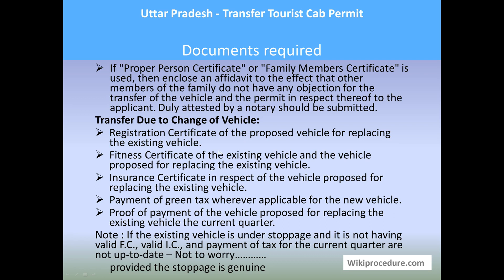For transfer due to change of vehicle: the registration certificate of the new vehicle, fitness certificate of both the existing and proposed replacement vehicle, insurance certificate for the replacement vehicle, payment of green tax wherever applicable for the new vehicle, and proof of payment of tax for the replacement vehicle for the current quarter must be provided. If the existing vehicle is under stoppage — meaning it is not operational due to lack of valid FC, valid insurance, or up-to-date tax payments — you can still transfer as long as the stoppage is not due to any criminal activities or legal issues; if so, you must clear those issues before applying.